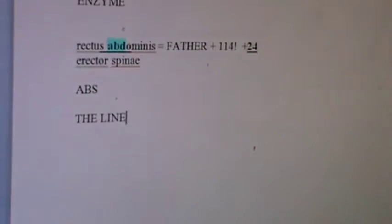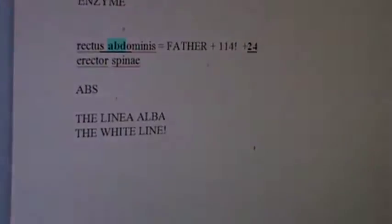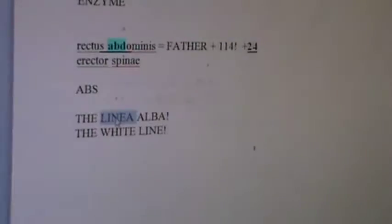The linea alba, also known in Latin as the white line. Well, what's amazing—so linea parallels Christ, it's 41 and it's minus 36 from Christ 77. This is so amazing to me.